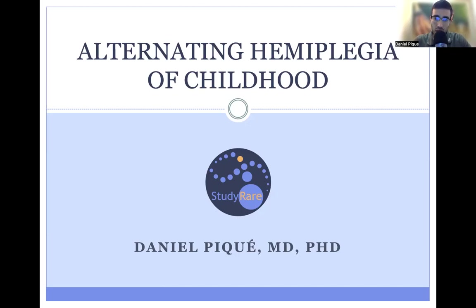Today we'll be talking about alternating hemiplegia of childhood. The major symptoms found in this condition are found in the name itself. It's a childhood onset disorder where we have hemiplegia, or paralysis of one side of the body — either the left side or the right side — that alternates. So between different episodes of hemiplegia, you might have the left side involved on one day, and then the next week, you might have the right side involved.